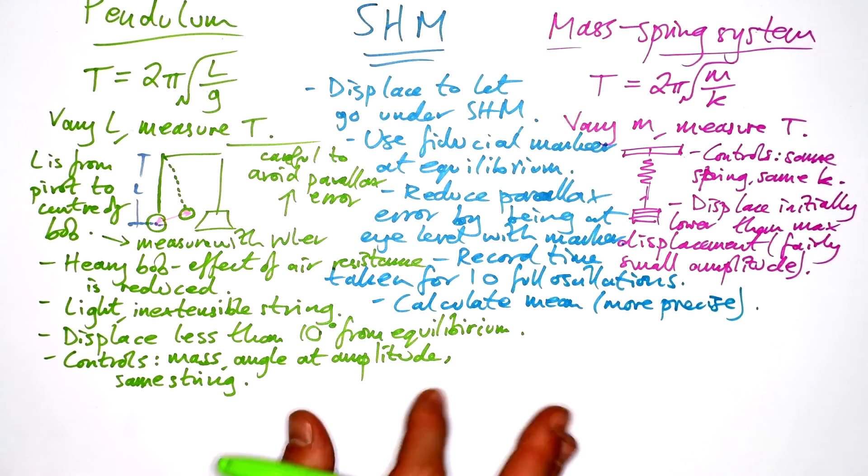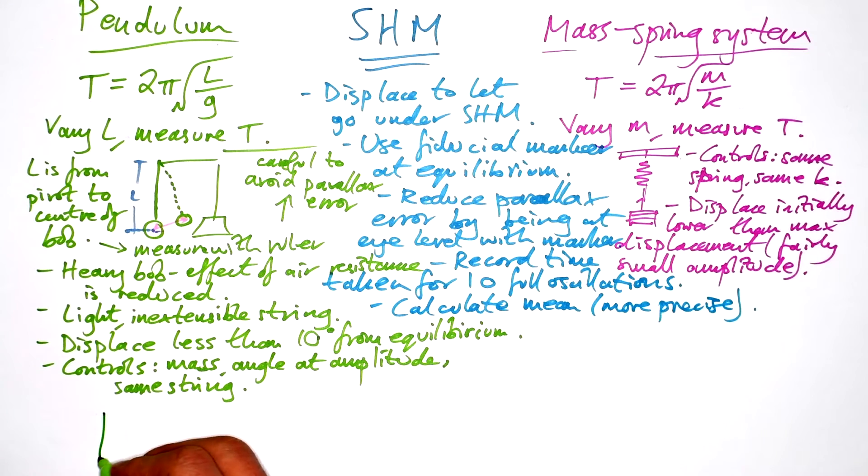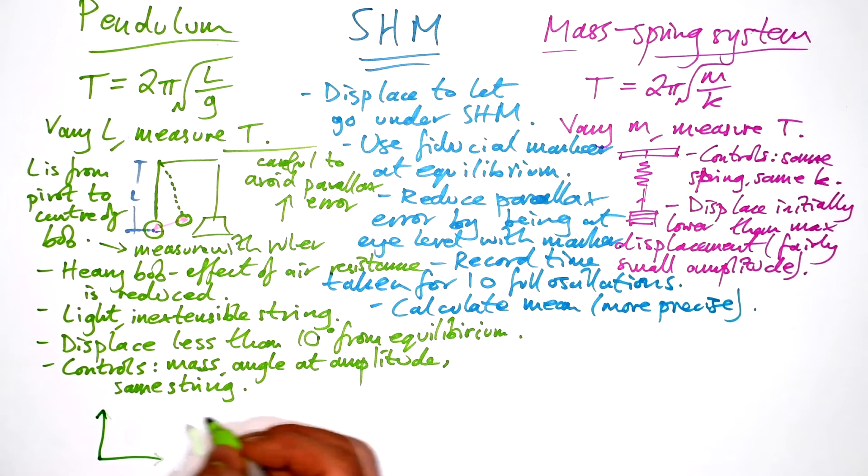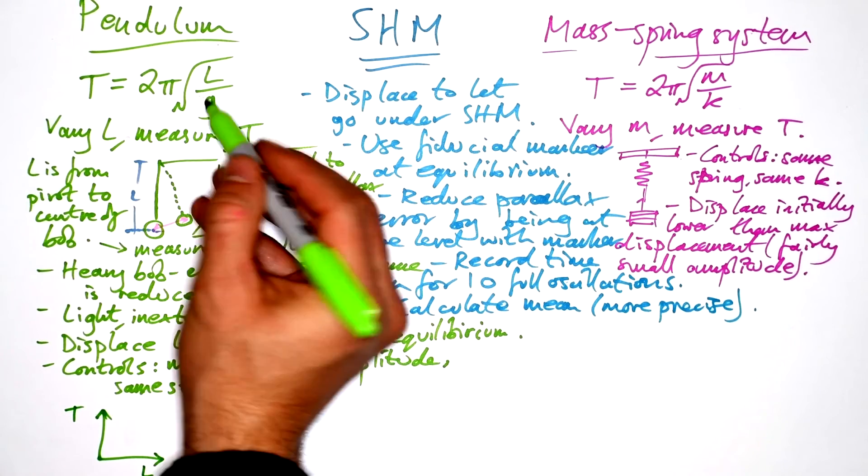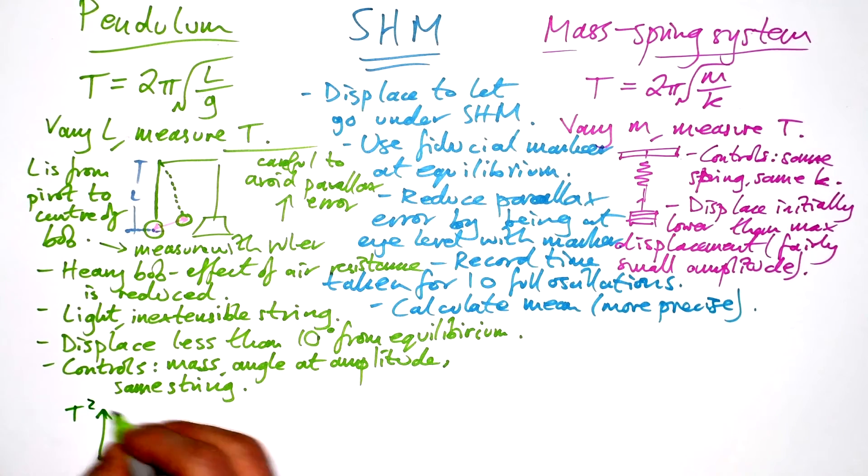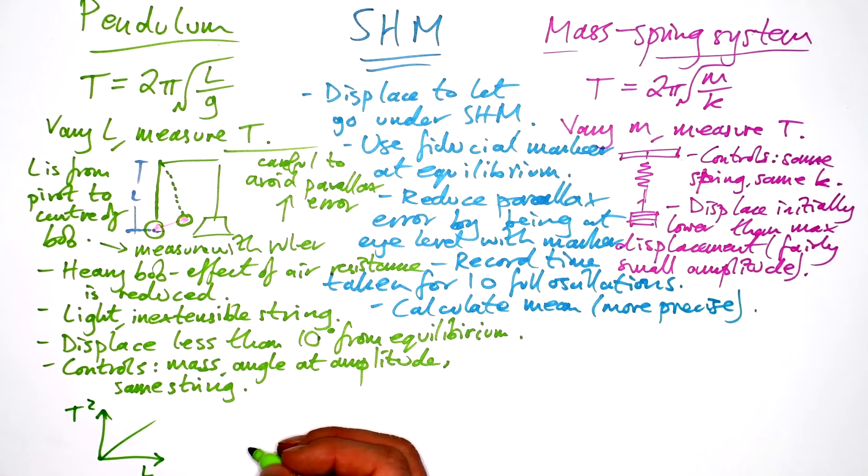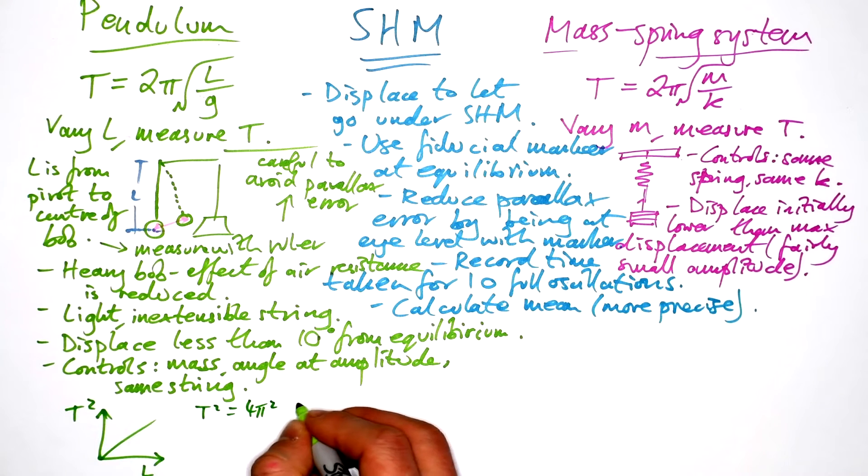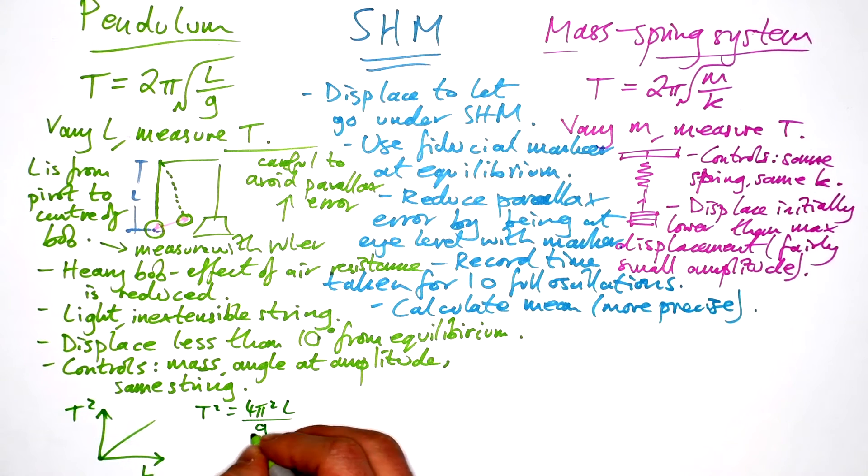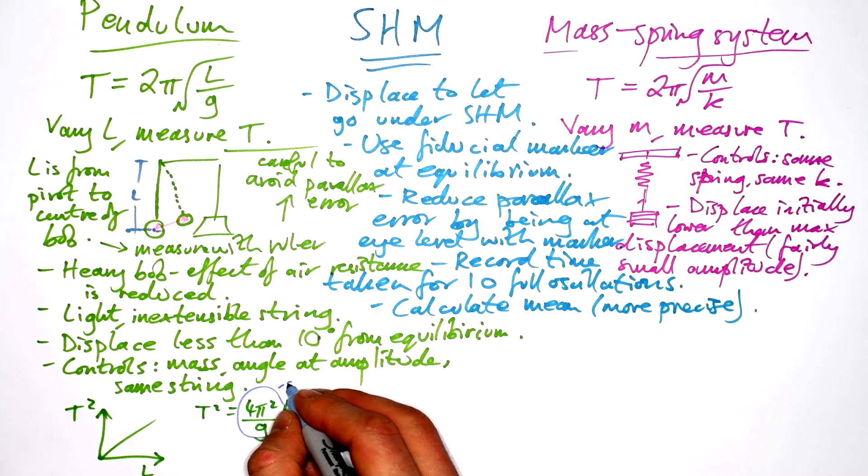So what can you then do with your results? Well, you can end up with a graph of, well, we can't have T against L because we can see that T is not proportional to L. If we have T squared against L, then we will end up with a nice straight line. Squaring the whole equation, we can see that T squared is equal to 4π² L over g. And so this is our gradient here, if we rearrange the equation to find T squared against L.